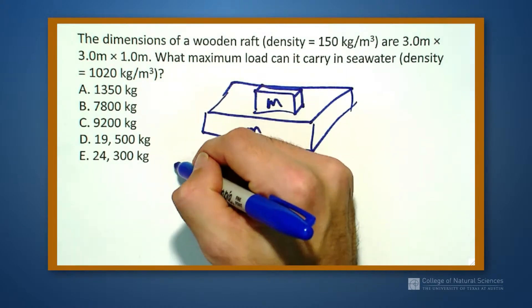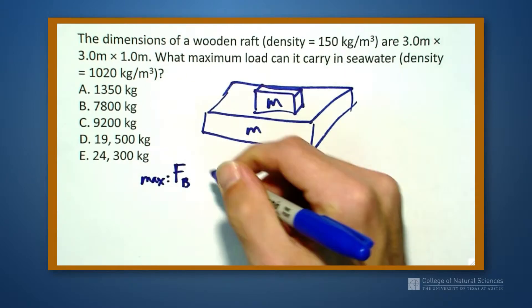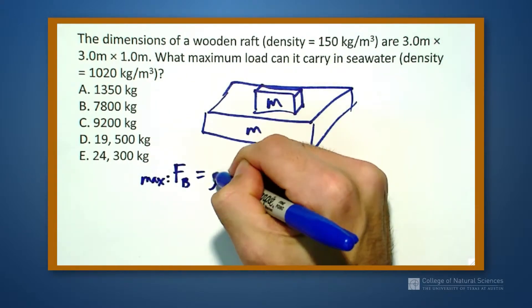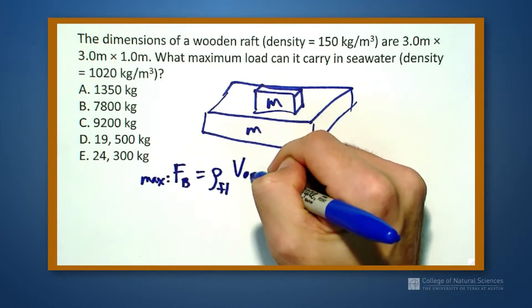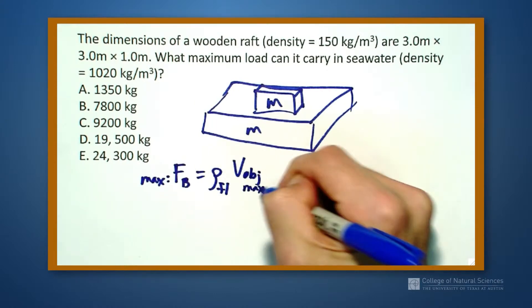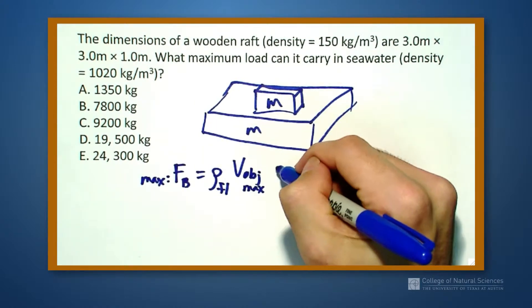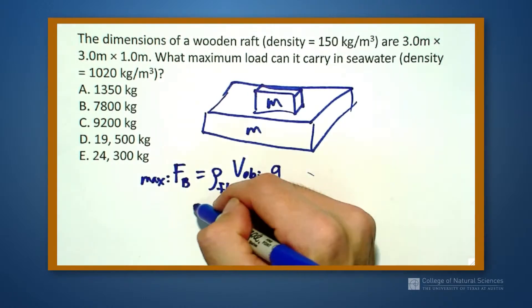I know that the maximum buoyancy force that this thing can have is going to be the density of the fluid times the volume of the object submerged. And if we submerge the maximum amount, the entire thing, that's going to be the maximum buoyancy force we get and this all is multiplied by g.